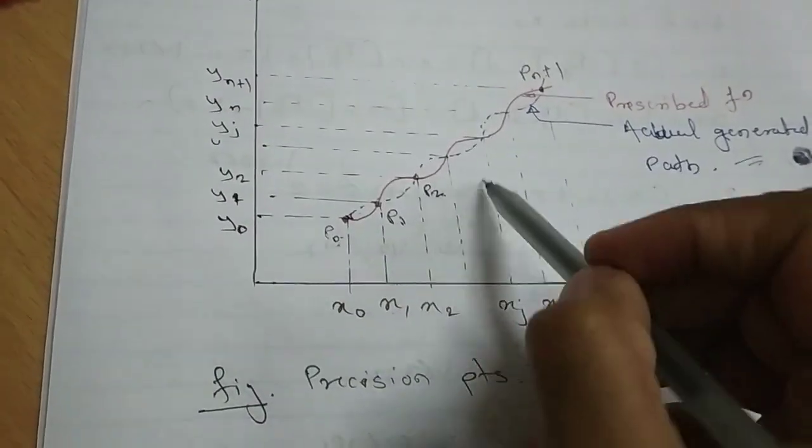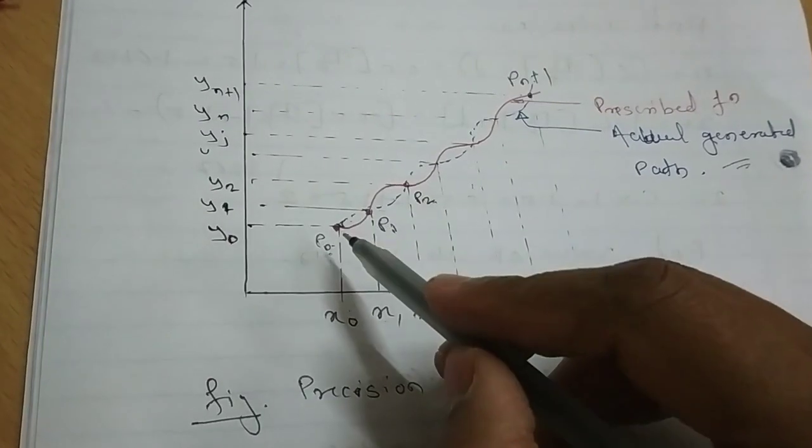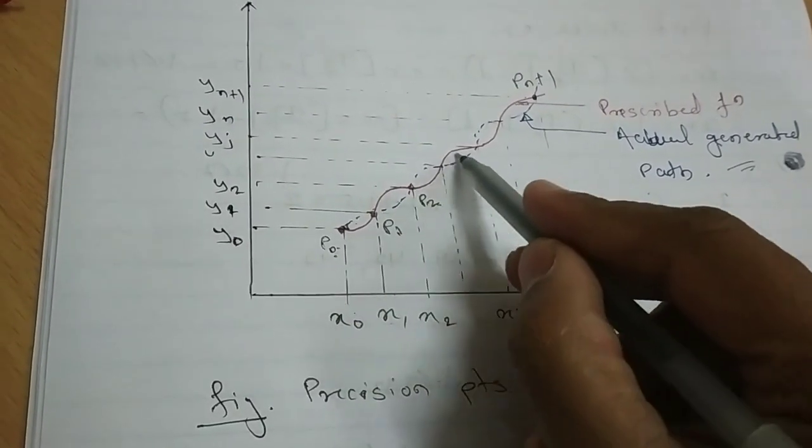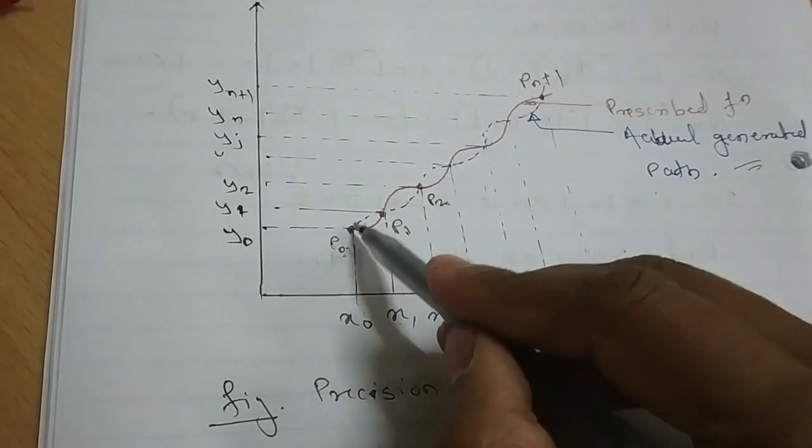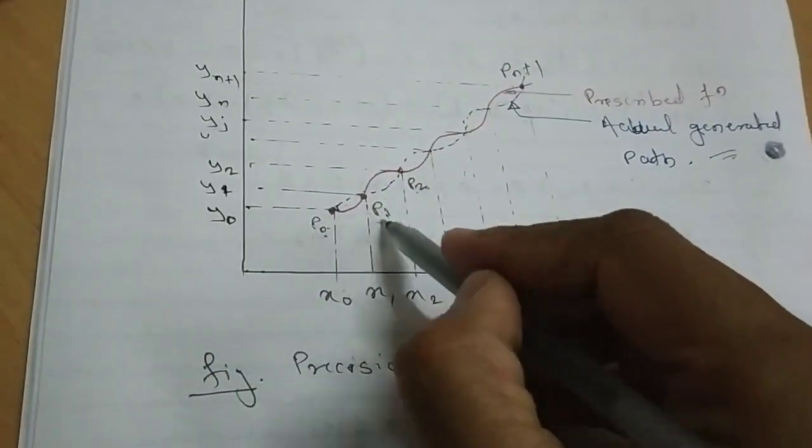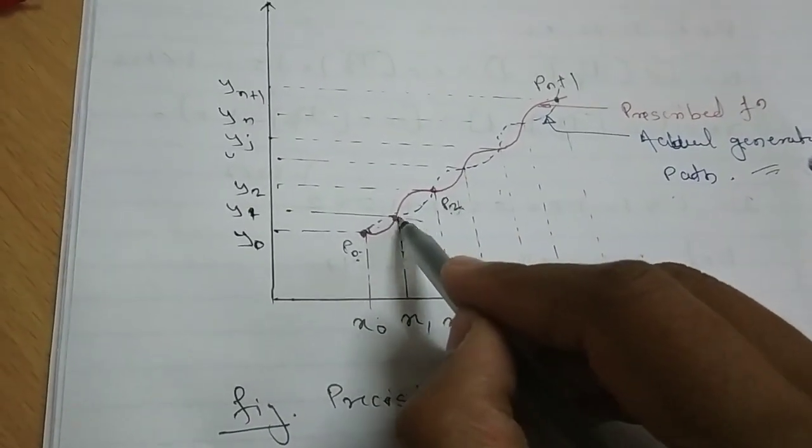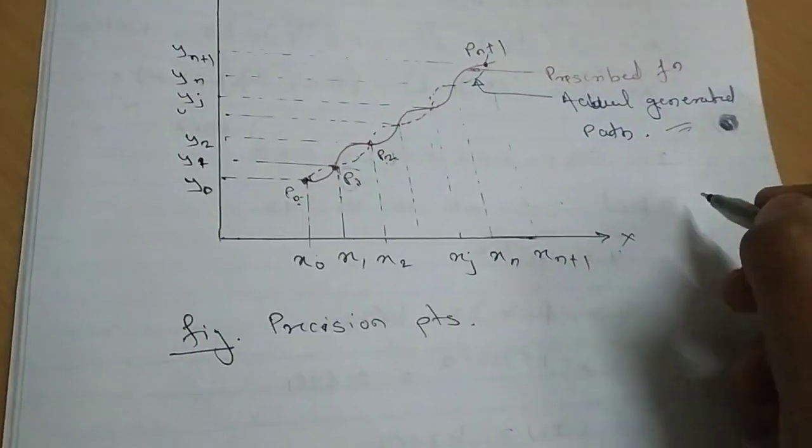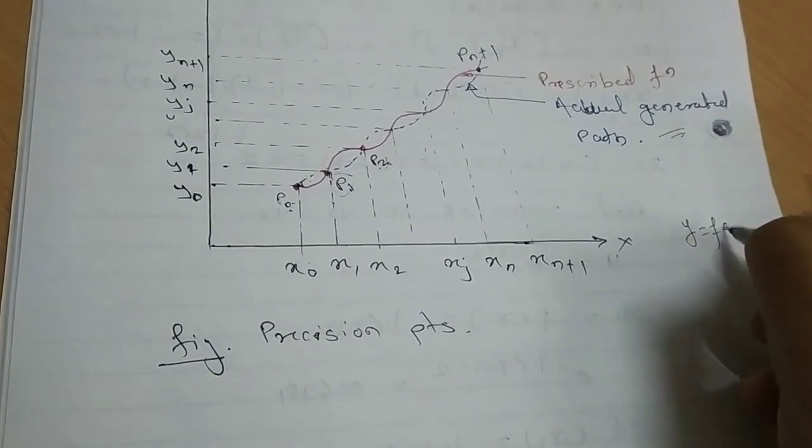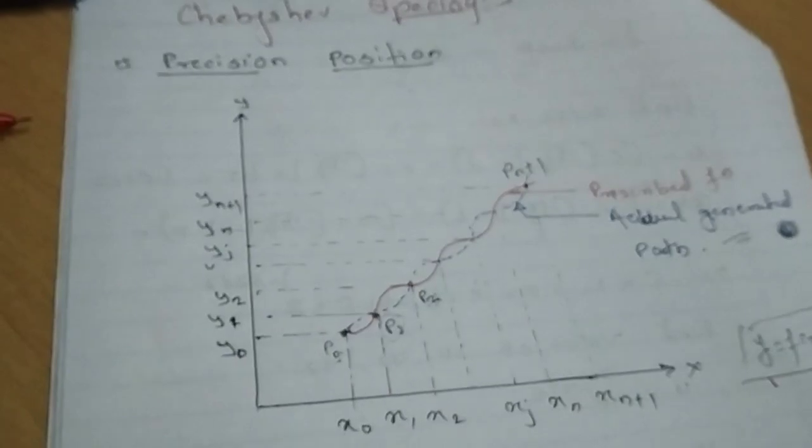Now how do those points follow the exact mathematical function? See, the prescribed function is followed with this. And the actual function meets or intersects prescribed at this precision point. So that this point is known as precision points or accuracy point where they can follow the exact mathematical function. Let us say y equals f of x. And this point is called as precision point.